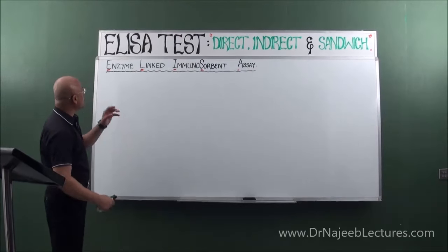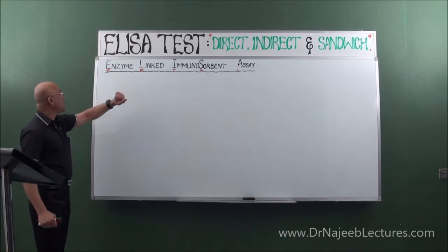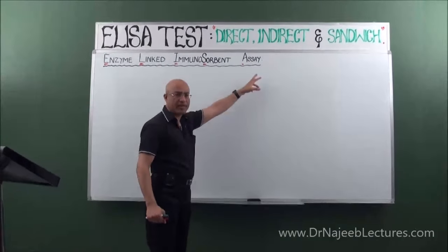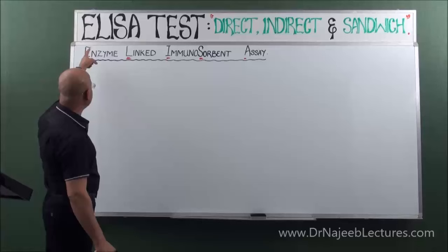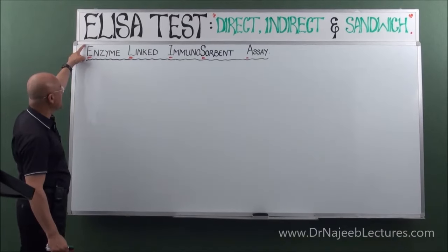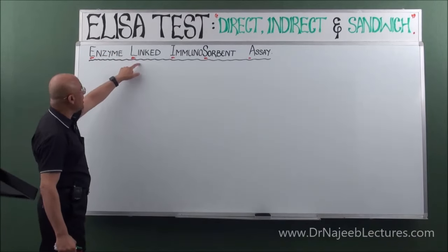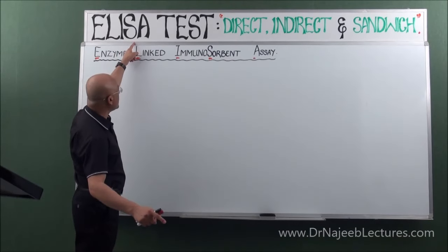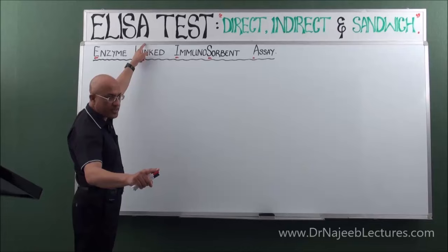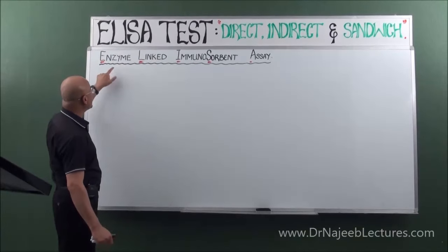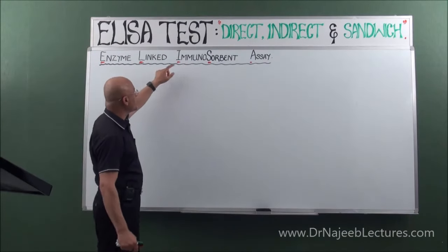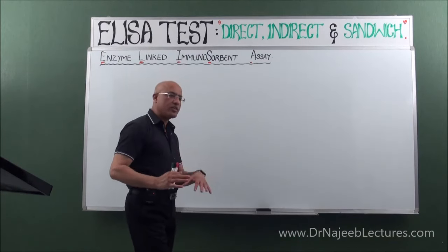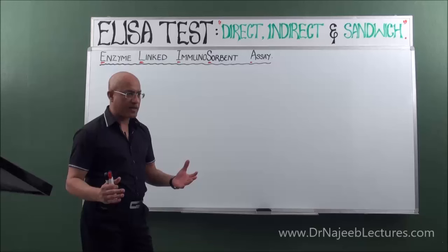Today we are going to talk about the ELISA test. ELISA stands for Enzyme-Linked Immunosorbent Assay: E for enzyme, L for linked, I for immuno, S for sorbent, A for assay.